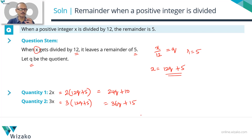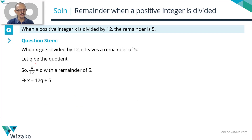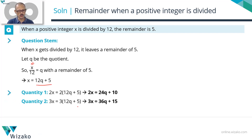Let's consolidate up to this point. The question stem gives us x divided by 12 equals q remainder 5, so x equals 12q + 5. Therefore, Quantity 1 — which is 2x — equals 24q + 10, and Quantity 2 — which is 3x — equals 36q + 15.